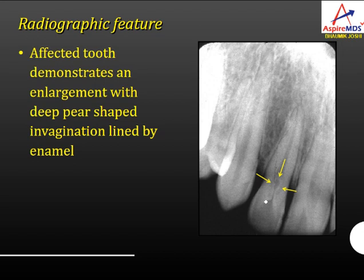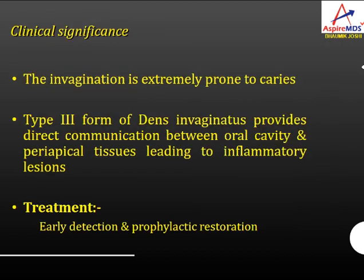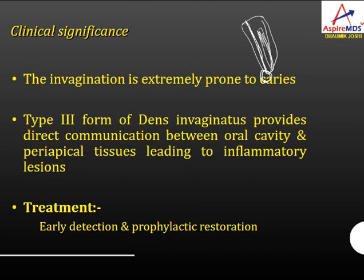Radiographically, the affected tooth demonstrates an enlargement with a deep pear-shaped invagination lined by epithelium. Clinical significance: the invagination is extremely prone to caries. In the type 3 form, it provides direct communication between the oral cavity and periapical tissue, creating risk of infection. Treatment requires root canal treatment. The recommended management is early detection and prophylactic restoration of the invagination.